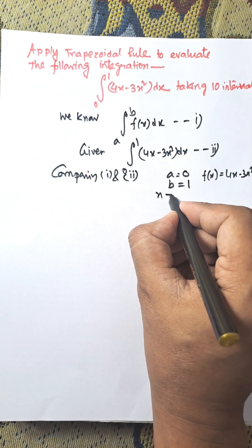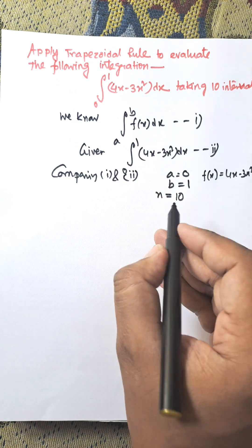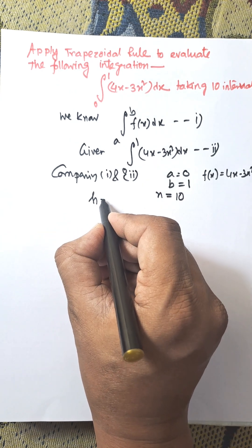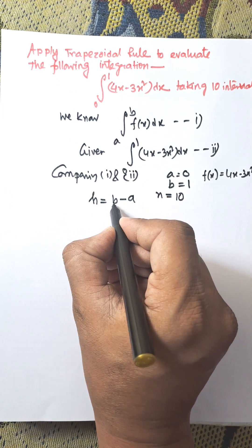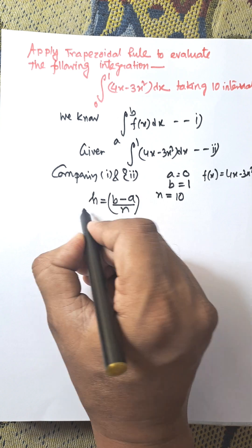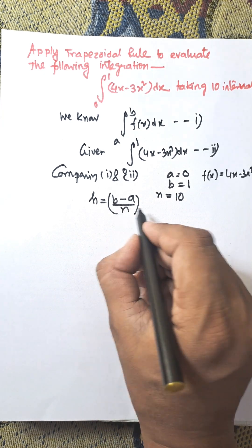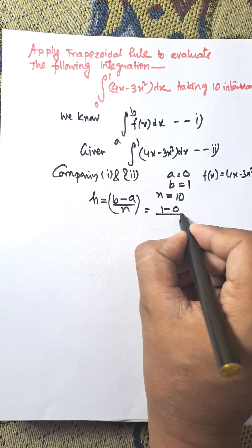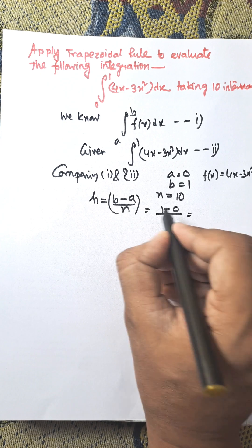Here n is the number of intervals, which equals 10. We know the increment h = (b - a)/n. This is the formula for finding the increment value. b equals 1, a equals 0, and n is 10, so h = 1/10 = 0.1.